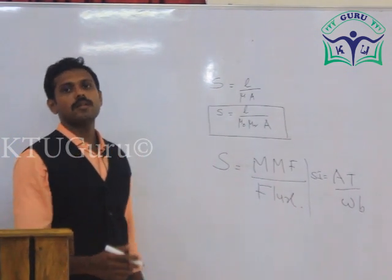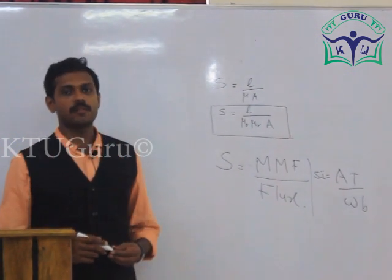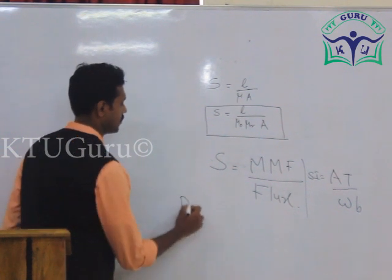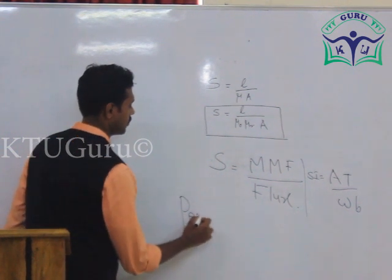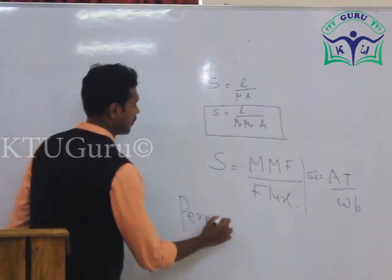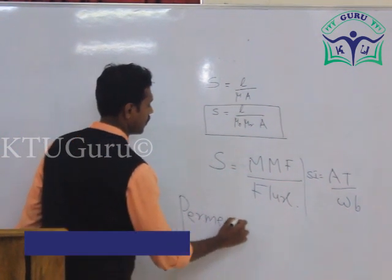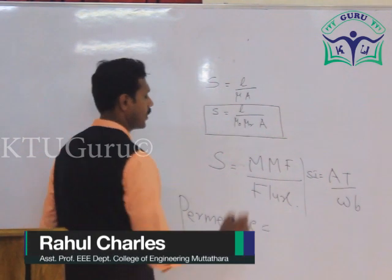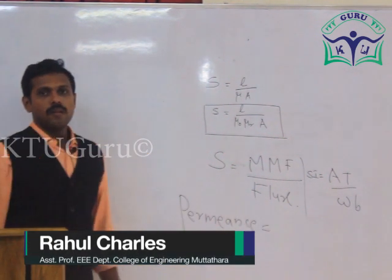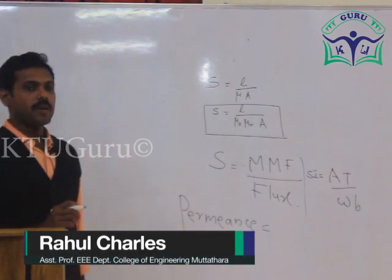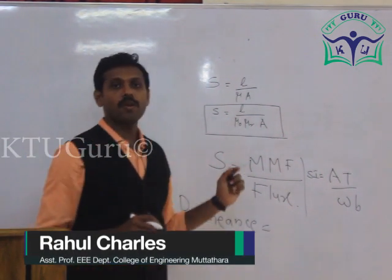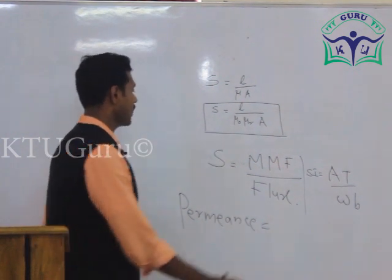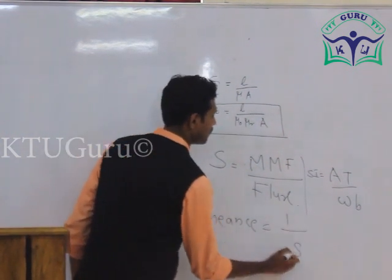Now, another definition: permeance. Simply, permeance is the reciprocal of reluctance. That means permeance equals 1 divided by S.